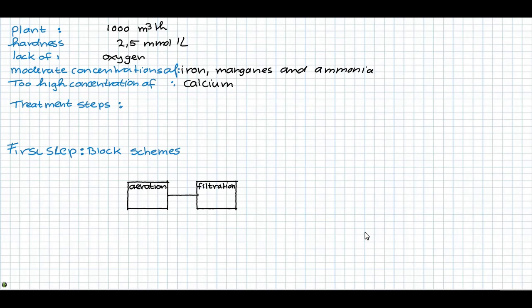And a too high content of calcium. To treat this water, we need at least one aeration and filtration step and a softening step. The latter can be done by nanofiltration, ion exchange or pellet softening.